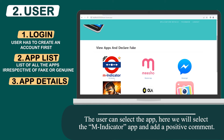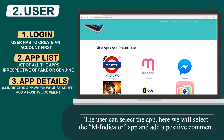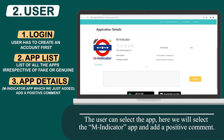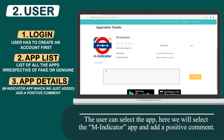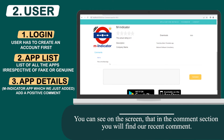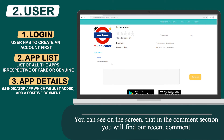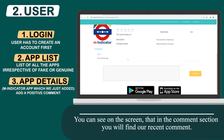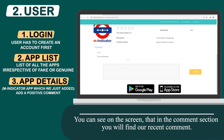The user can select the app. Here, we will select the M Indicator app and add a positive comment. You can see on the screen that in the comment section, you will find the recent comment.